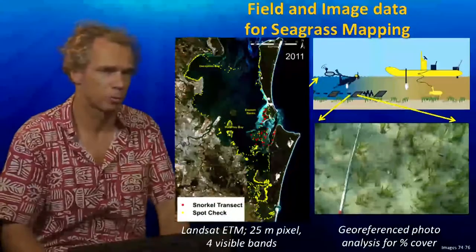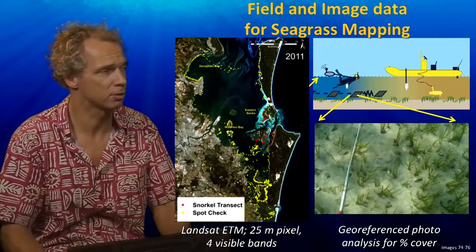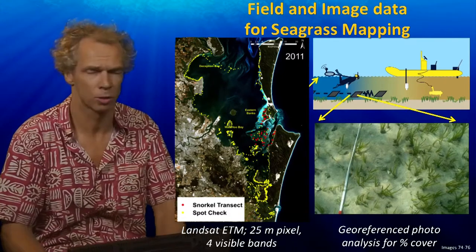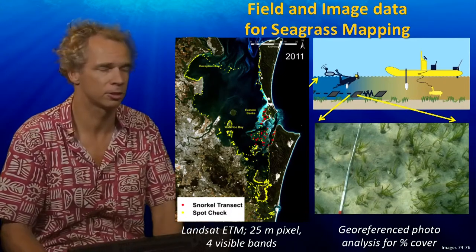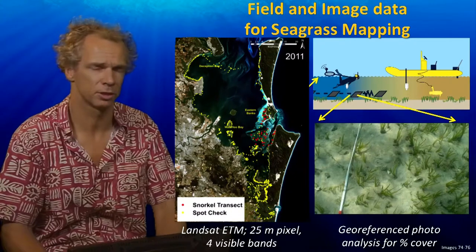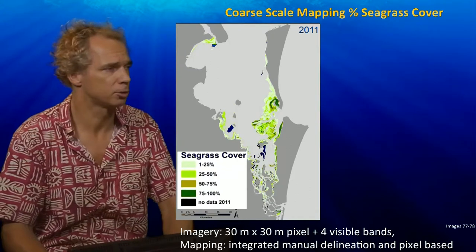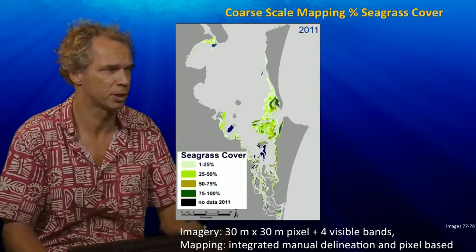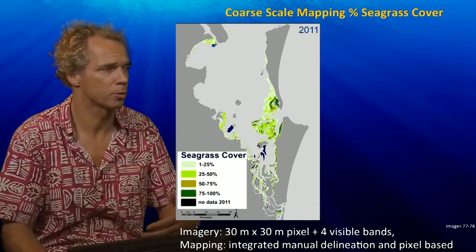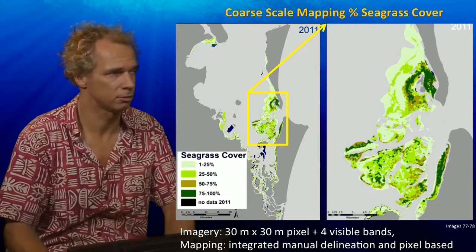To gain knowledge about where the seagrass is we use remote sensing, but it requires field data as well. That is why we go into the field and collect information throughout Morton Bay, done by snorkeling, diving, or using cameras lowered from boats or robots. These photos can be analyzed for percentage cover or species composition. That information is then used together with Landsat imagery, which has a pixel size of 30x30 meters, to manually delineate or use pixel-based approaches to create maps providing coarse scale maps of percentage seagrass cover.